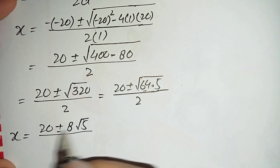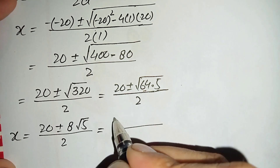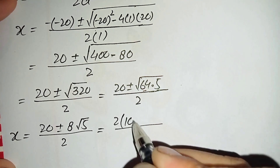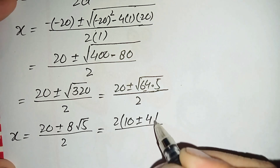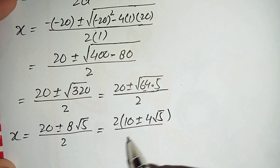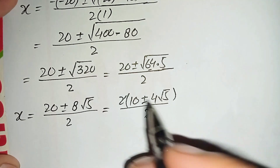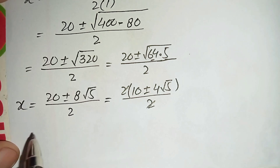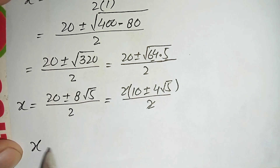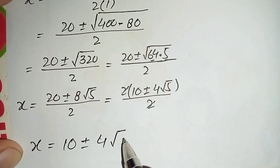We take 2 as a common factor from the numerator to cancel with the denominator: (20 plus or minus 8 root 5) divided by 2 = 10 plus or minus 4 times square root of 5. So the value of x is equal to 10 plus or minus 4 times square root of 5.